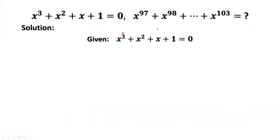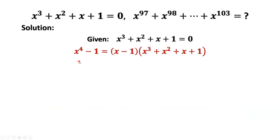This is the given condition. We are going to use the following formula to find the value of this expression: x to the power of 4 minus 1 equals x minus 1 times x to the power of 3 plus x squared plus x plus 1.